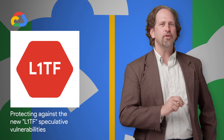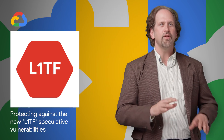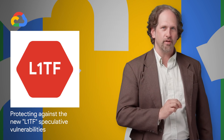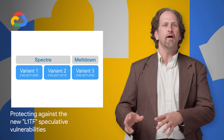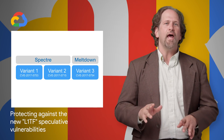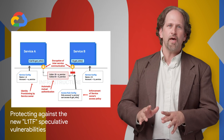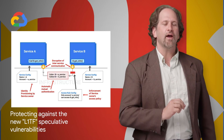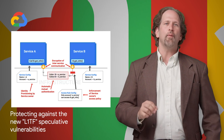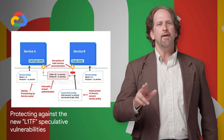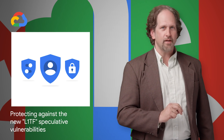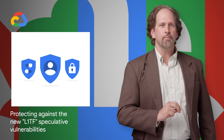Earlier this year, Google's Project Zero team disclosed serious security flaws rooted in speculative execution. Spectre and Meltdown were the first instances of these attacks, and now Intel has published details on a new set of speculative execution vulnerabilities. Head on over to the post to learn how we mitigate guest-controlled entries not controlled by the host OS, and what steps you may need to take to ensure you are fully protected.